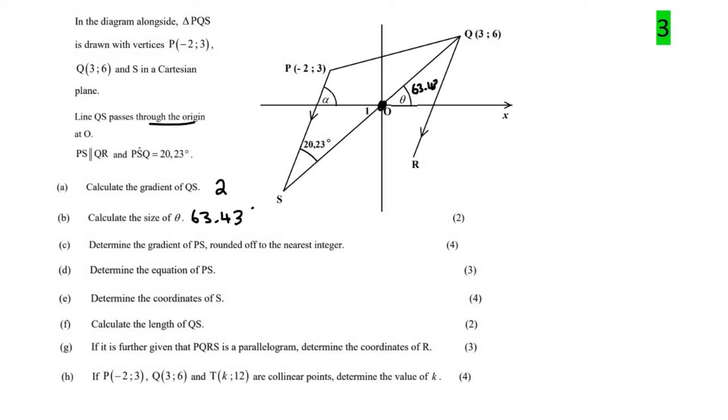Question C says determine the gradient of PS. So they want the gradient of this line over here. But now we don't know what the coordinates of S are, so we can't really get the gradient. But what we can do is we can realize that if this is 63.43, then angle O1 would also be 63.43. And that's just because of vertically opposite angles. And then we could easily work out this angle over here because it is the exterior angle of the triangle. We've got a triangle over here, and this angle is the exterior angle. So you can easily say then that alpha is going to be equal to 63.43 plus 20.23. And that's just because of exterior angle of a triangle. And so alpha should be 83.66 degrees.